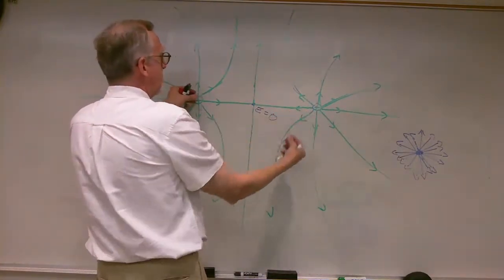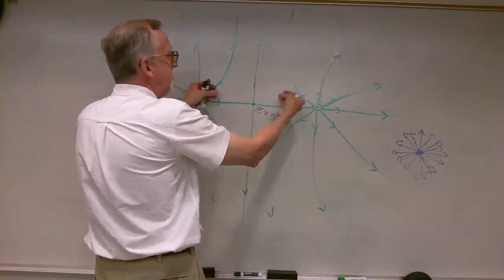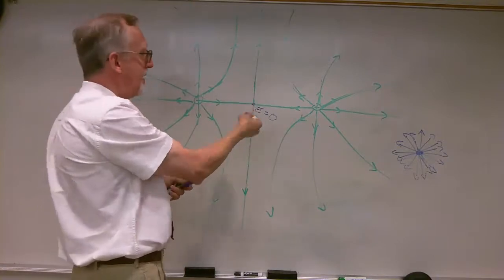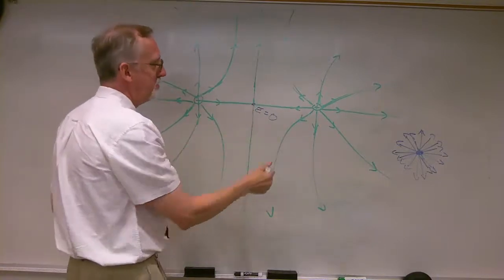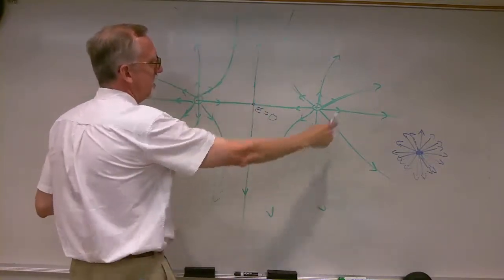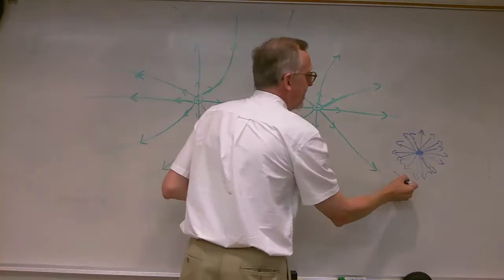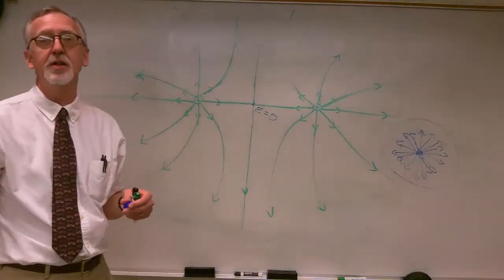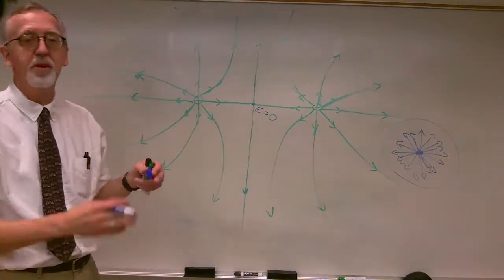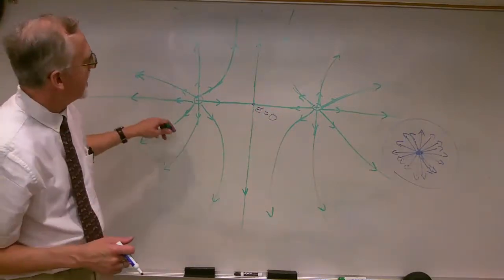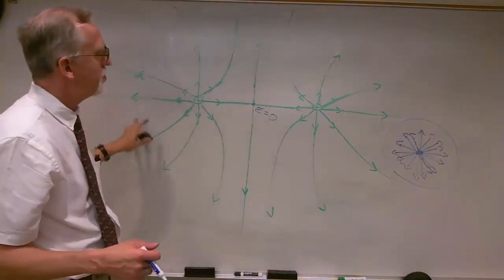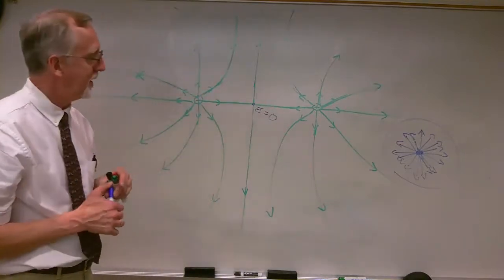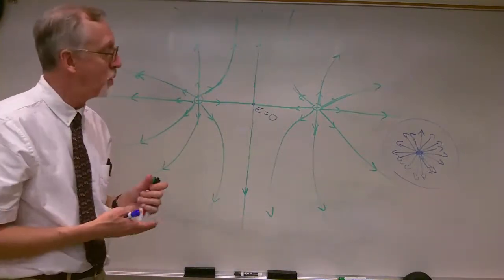That's just what we would expect. If you've got one Coulomb here and one Coulomb here, and you're far enough away, these look like two Coulombs right on top of each other. This electric field line drawing is going to look like the drawing of a single charge of two Coulombs if you're far enough away — and that kind of makes sense.